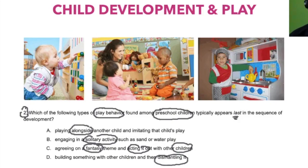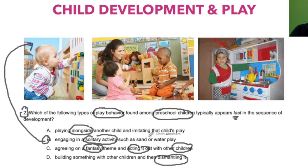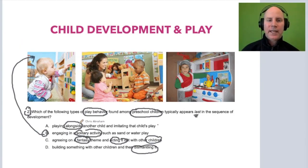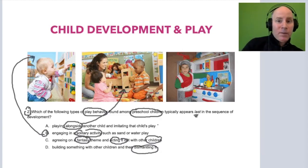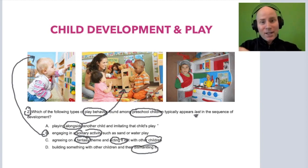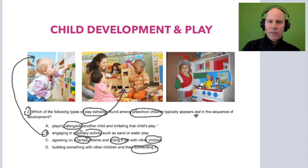Which one of these is solitary play? That's B — that infant or toddler is playing by themselves, not interacting with another child. This would be that first stage of play. Which one's parallel play? I think A is referring to it — the word 'alongside.' The child is playing alongside another child. Maybe one child's playing with blocks and the other child's playing with blocks, but they're not acknowledging each other. This is parallel play — the intermediate stage of play.